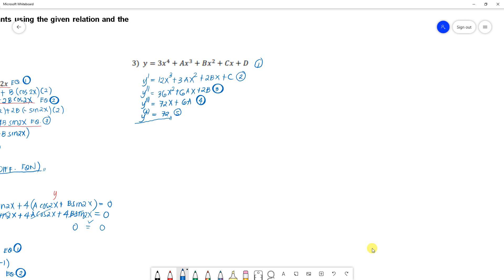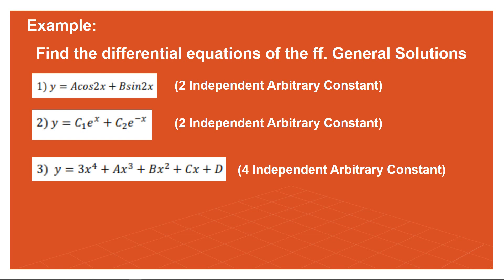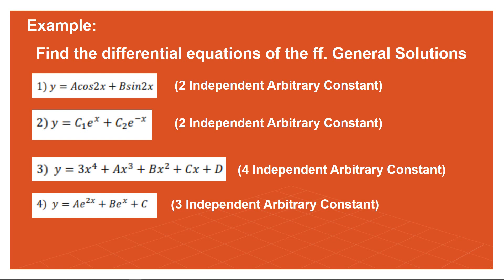Since the fourth derivative gives y⁽⁴⁾ = 72 with no arbitrary constants remaining, this is our final answer — the differential equation of the primitive. We can also call it the particular solution since the independent constants have all been eliminated.